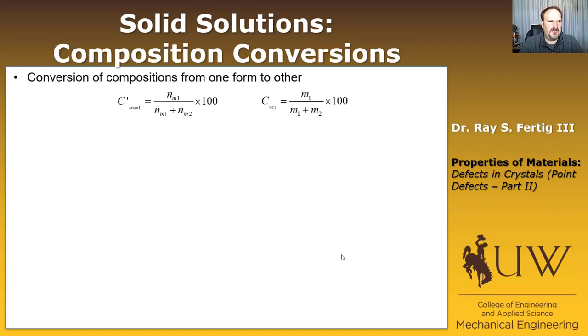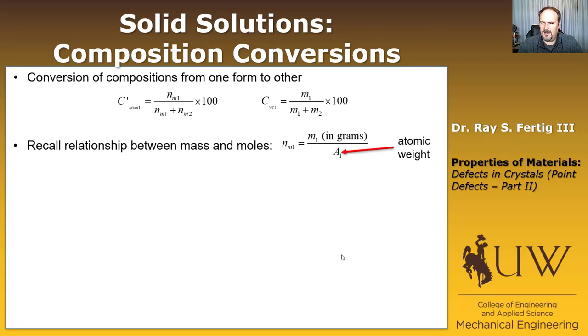Sometimes though, it's convenient to convert from one form to the other, from the atomic percent to the weight percent and vice versa. And we can do that easily just by remembering the relationship between mass and moles. So we have the number of moles of one is equal to the mass of one in grams, divided by A1, which is just the atomic weight. So if you use that, you can go through and you can develop all sorts of relationships. Your book gives you a bunch of them. I'm not going to give them all to you here. I'll just give you three conversions.